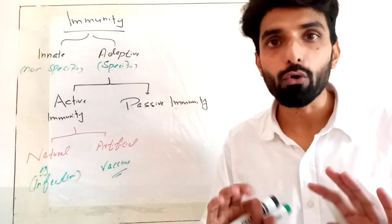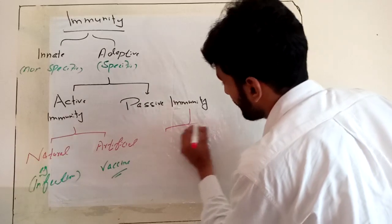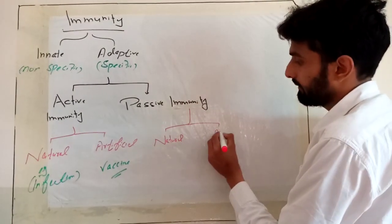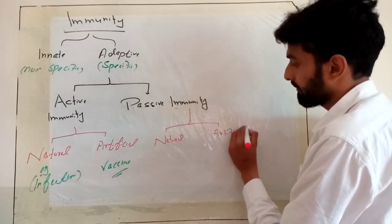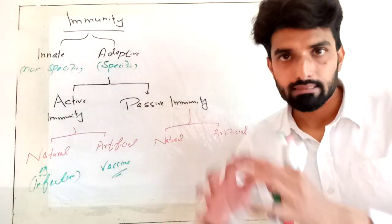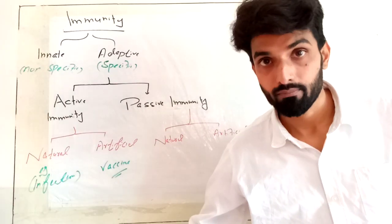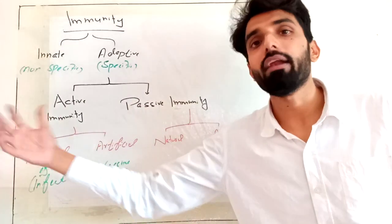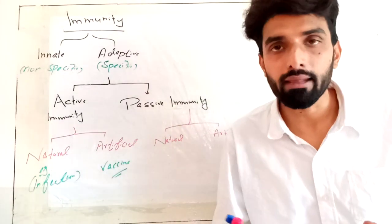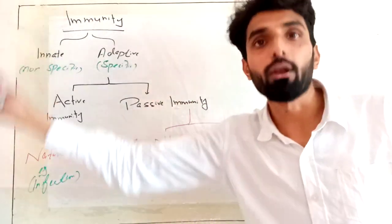Now let's talk about passive immunity — the type of immunity in which your immune system is not making any antibodies; instead, you are getting antibodies from some other host. There are also two major types: natural and artificial. For example, a fetus in the placenta is getting immunity from antibodies made by the mother. The fetus is not making antibodies by itself, so this is passive immunity.